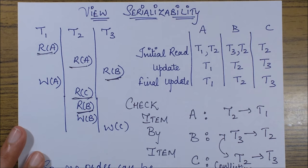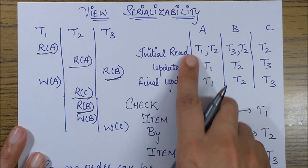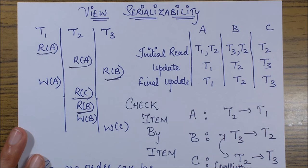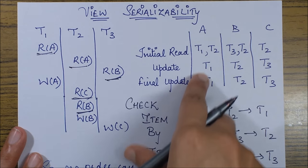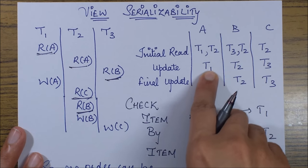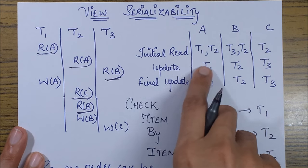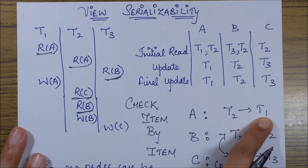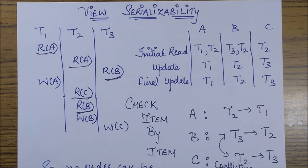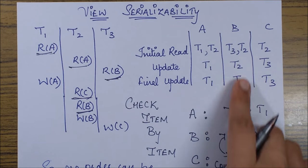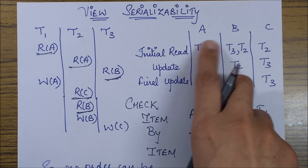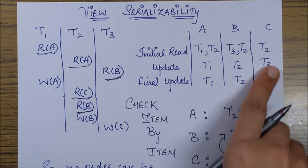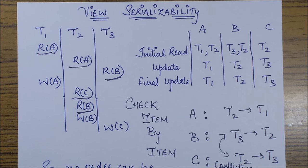Now let's analyze the orders. For data item A, T1 and T2 perform reads and T1 performs the write. Since the same transaction cannot violate its own initial read, T2 must come before T1. So the order for A is T2 before T1, with T3 anywhere. For data item B, we have T3 and T2 as initial reads with T2 as the updater, giving order T3 before T2. For data item C, we get T2 before T3.